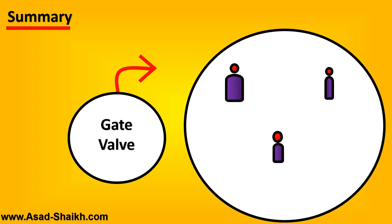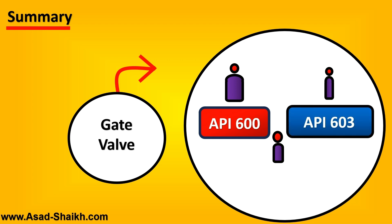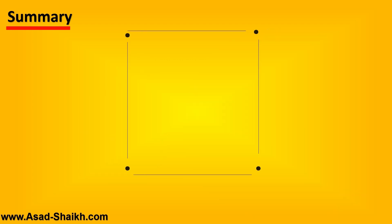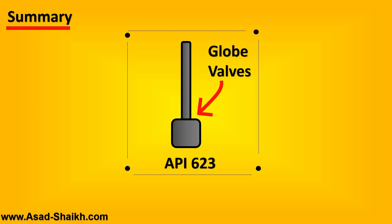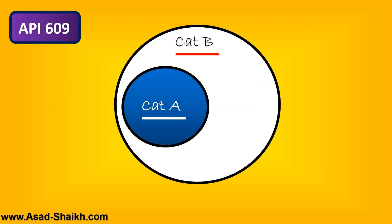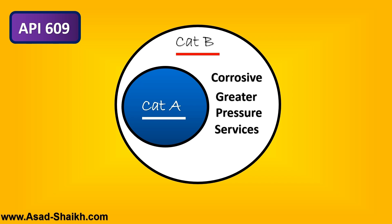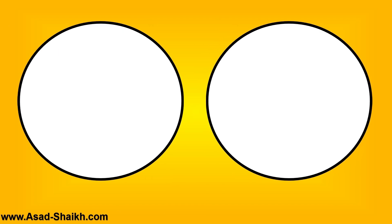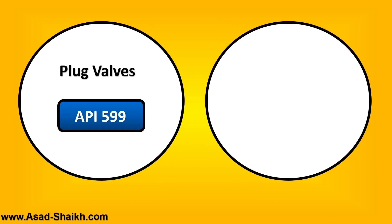In summary: for gate valves, the three brothers are API 600 (heavy-duty, the hefty brother), API 603 (similar but thinner, comparable to ASME B16.34), and API 602 (the smaller brother for very small applications). For globe valves, API 623 was specially designed to address stem thickness and diameter requirements. For butterfly valves, API 609 has Category A for non-critical low-pressure applications and Category B for high-performance, high-pressure, and corrosive services. For ball valves, API 608 covers floating and trunnion-mounted designs. For plug valves, API 599 applies; for check valves, API 594 is the predominant standard.